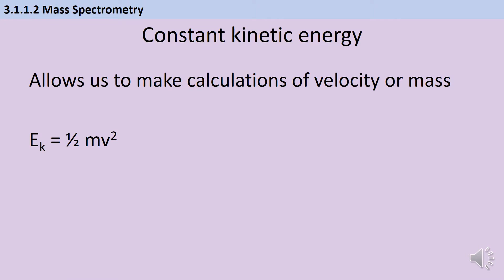All of these calculations come back to the idea that within the mass spec the ions are all accelerated until they have constant kinetic energy, so every ion has the same amount of energy regardless of what its mass is. And that means that if you know what its mass is, then you can work out what its velocity is and complete other calculations.